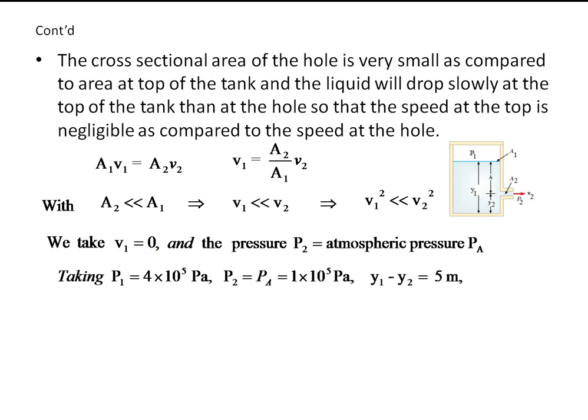The pressure P2 is atmospheric pressure. Taking P1 and P2 and Y1 minus Y2 equals 5, and using these values in here, we get the speed of efflux will be equal to 26.4 meters per second.